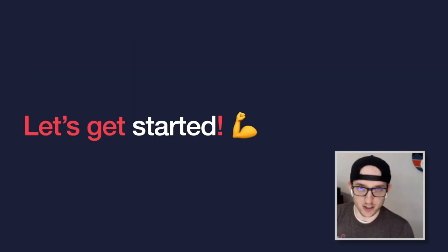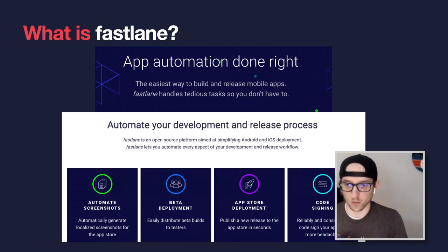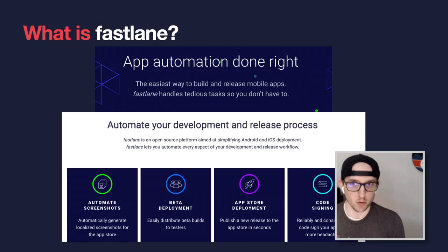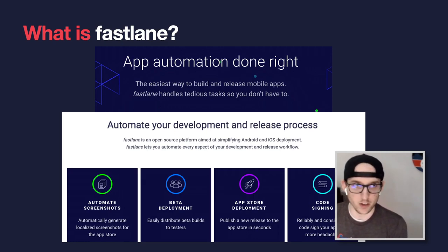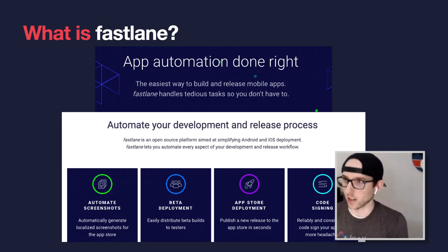Let's get started. Fastlane is mobile app automation done right — the easiest way to build and release mobile apps, going from screenshots, deployment, App Store, and code signing. We're going to be going through most of that today, except for automated screenshots. We don't have time for that.